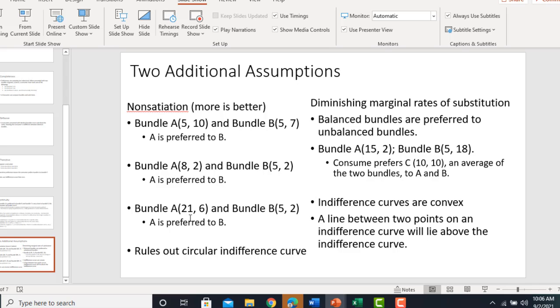And here, bundle A has more of both goods, so bundle A will be preferred to bundle B. This is going to rule out circular indifference curves.